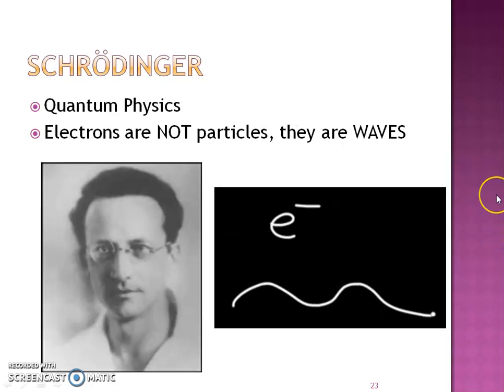Then Schrodinger said these electrons really aren't particles — they're waves. He came up with what's called quantum physics, and remember, physics is all about movement. So if these electrons are particles but also considered waves, these waves give us different wavelengths and different frequencies — something you're going to learn in Chapter 5.